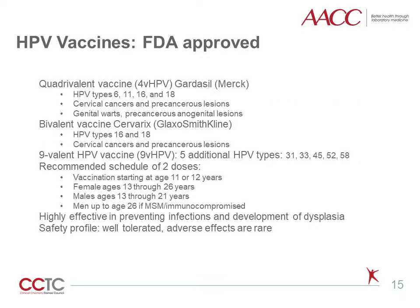Besides cervical cytology, preventive strategies for HPV-related cervical cancer also include HPV vaccines, three of which have been FDA-approved in the U.S. Gardasil is a quadrivalent vaccine targeting HPV type 6, 11, 16, and 18, and has been approved for cervical cancers and precancerous lesions, genital warts, and precancerous anogenital lesions. Cervarix targets only HPV 16 and 18 and is approved for prevention of cervical cancers and pre-invasive lesions. Recently, the FDA has also approved a 9-valent vaccine, which is effective against 5 additional high-risk HPV subtypes: 31, 33, 45, 52, and 58.